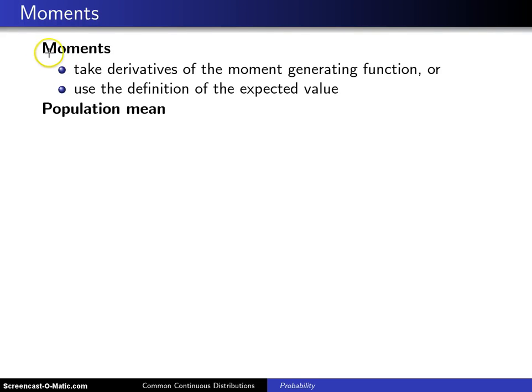There are two different ways of finding the moments of a uniform a, b random variable. The first way is to take the derivatives of the moment generating function, which was derived on the previous slide. The second way is to use the definition of the expected value.